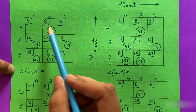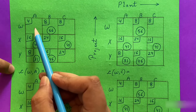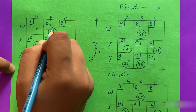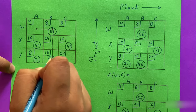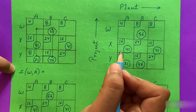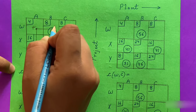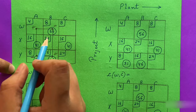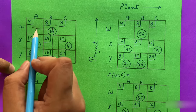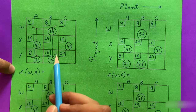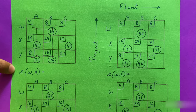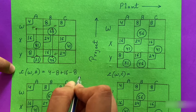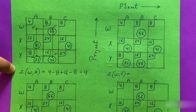Now we find improvement indices for all unused squares in the new matrix. For WA, we trace the closed path, stepping through stone squares and returning home. Remember to always start with a plus sign from the unused square. The cost: 4 − 8 + 16 − 8 = +4.